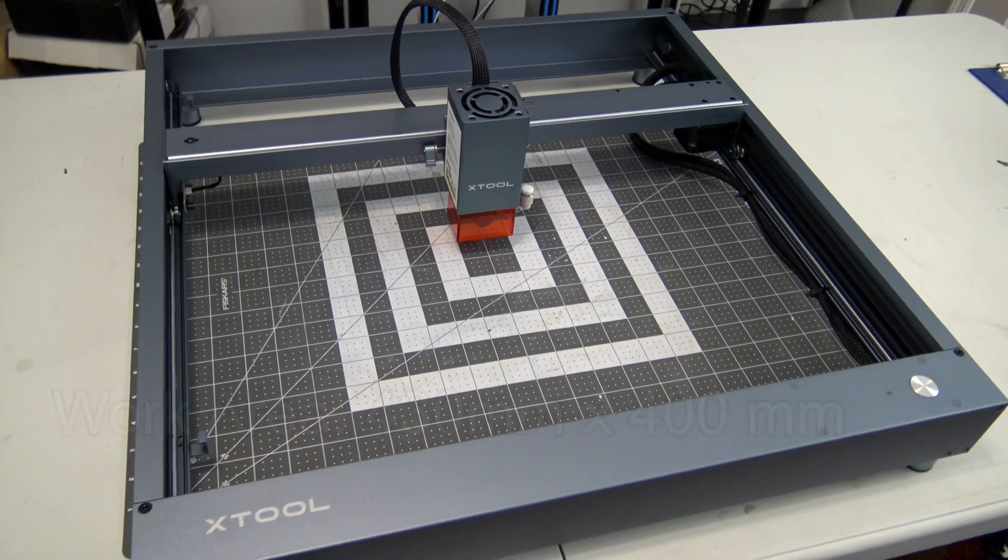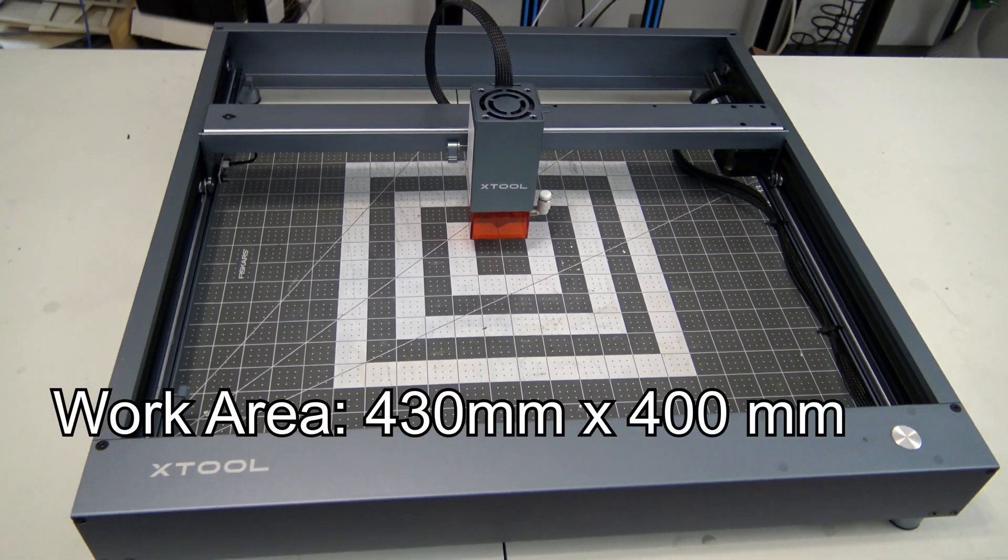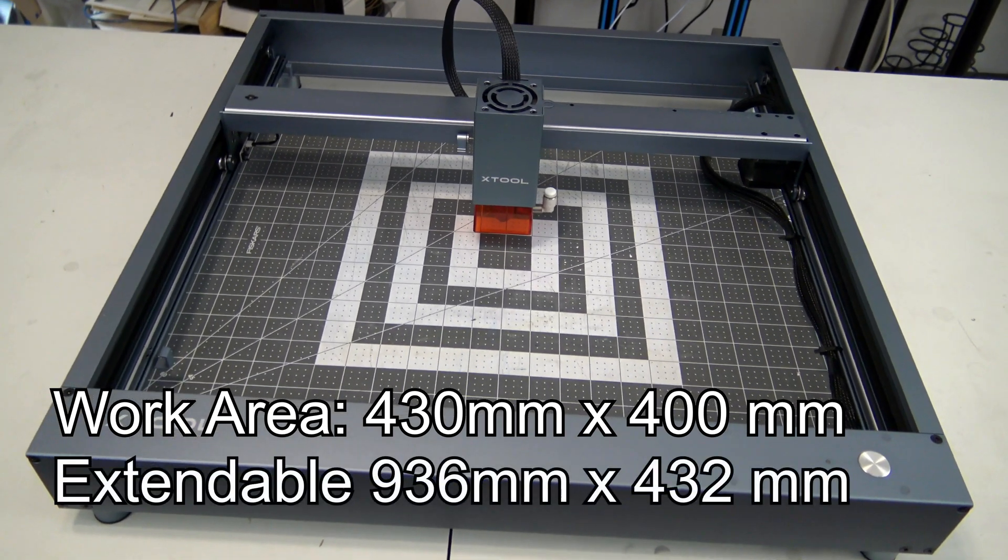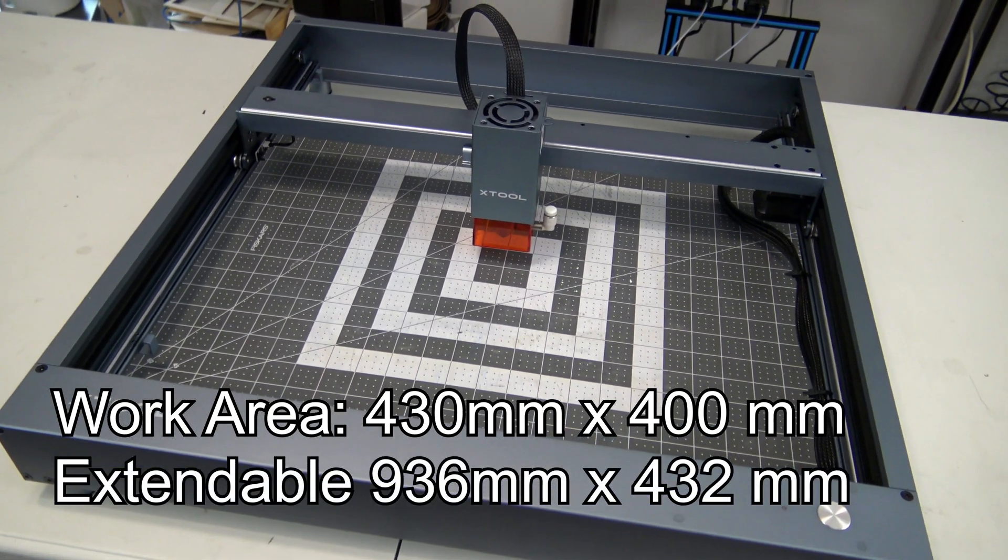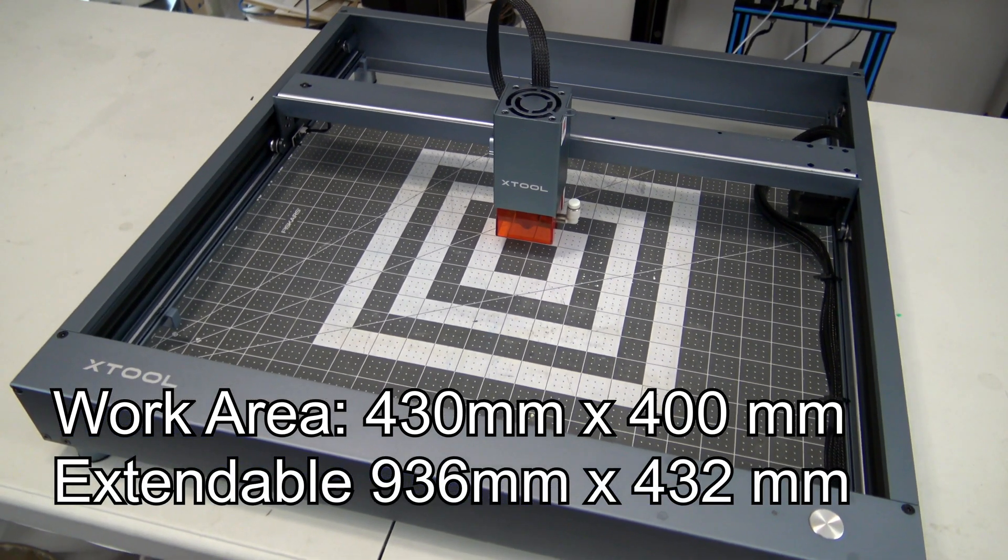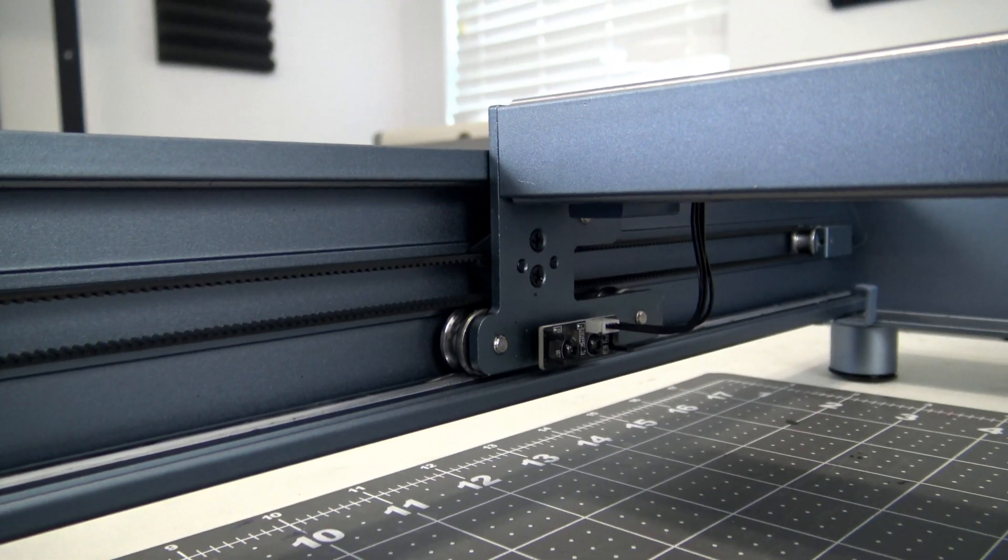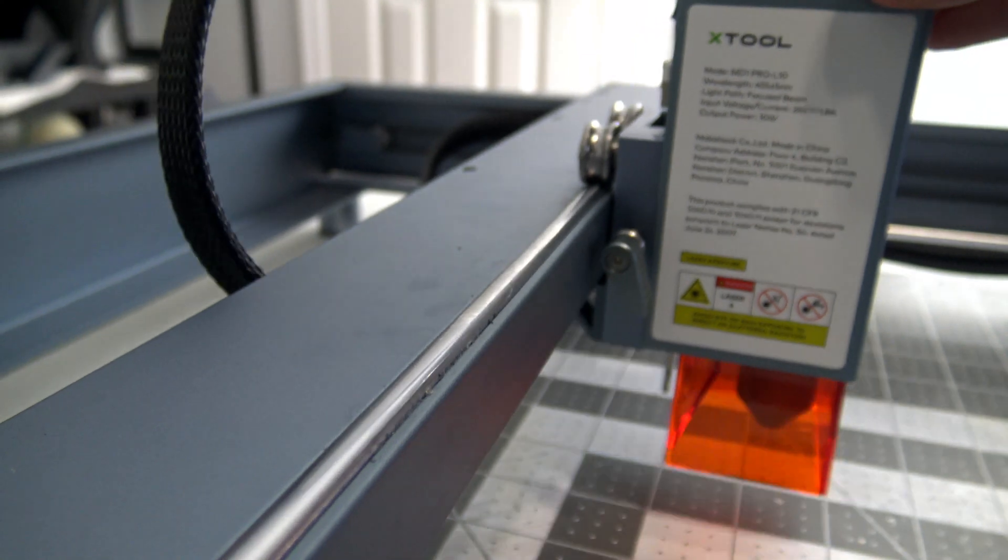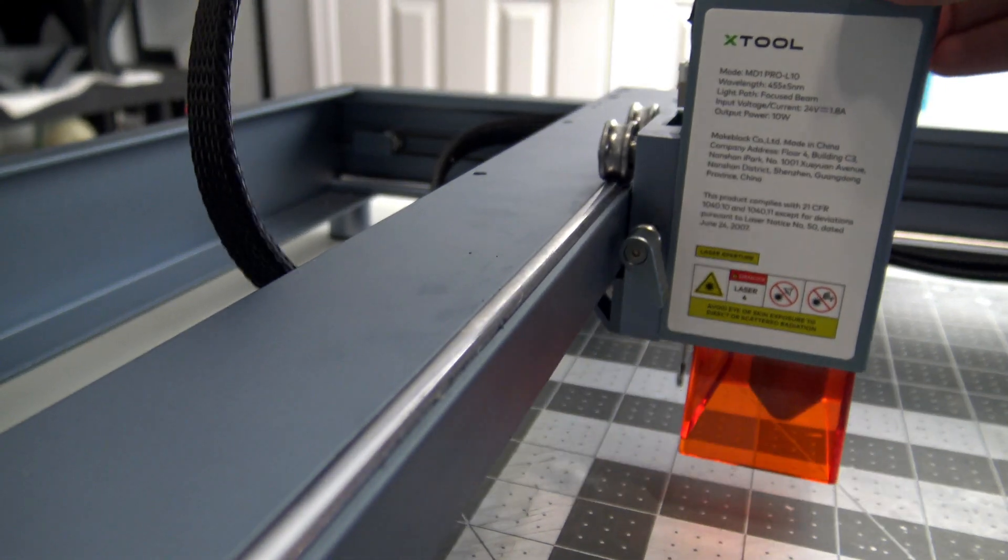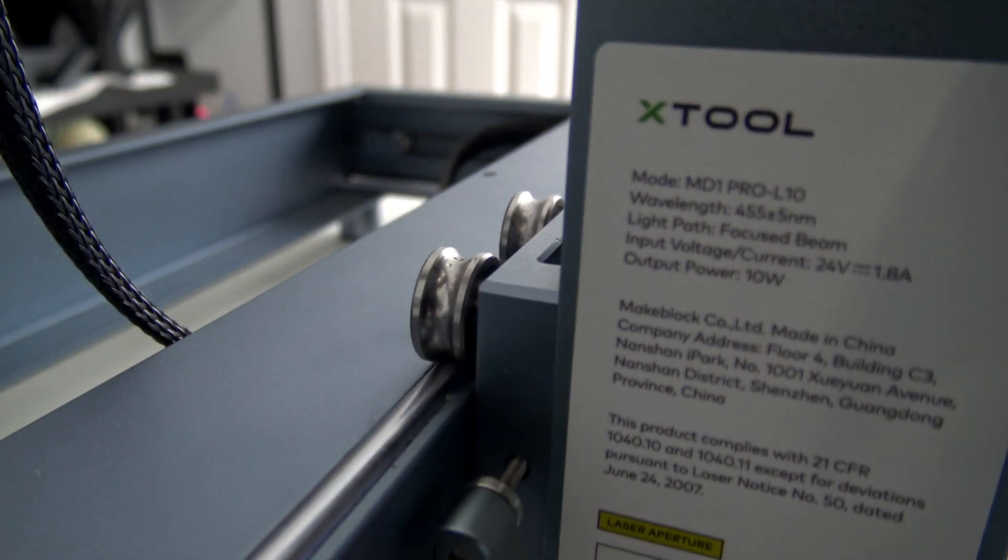The D1 Pro has a work area of 430 millimeters by 400 millimeters that is extendable up to 936 millimeters by 432 millimeters with their optional extension kits. The X and Y axes are belt-driven and ride on steel wheels and rods. The motion is extremely smooth, and the wheels should hold up well after extended use.